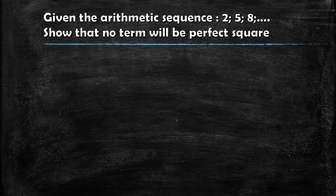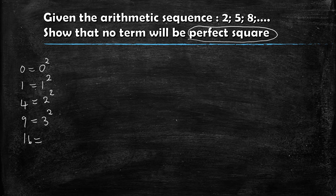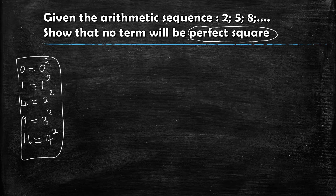In order to prove this, you must first understand what a perfect square is. For example: 0 is a perfect square, written as 0²; 1 is a perfect square, written as 1²; 4 is a perfect square, written as 2²; 9 is a perfect square, written as 3²; 16 is a perfect square, written as 4². Those are some examples of perfect squares.